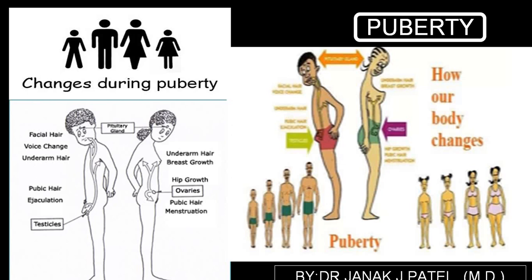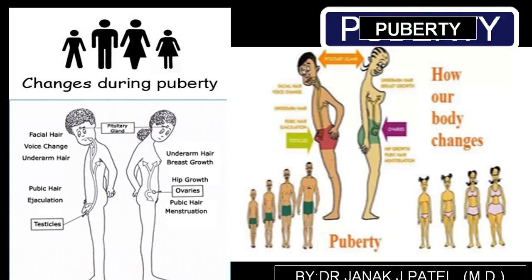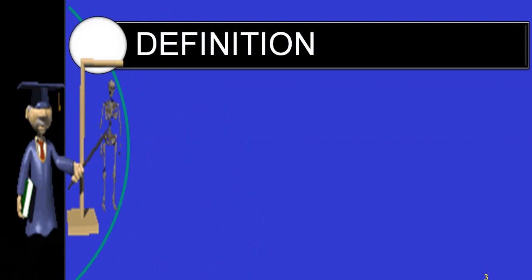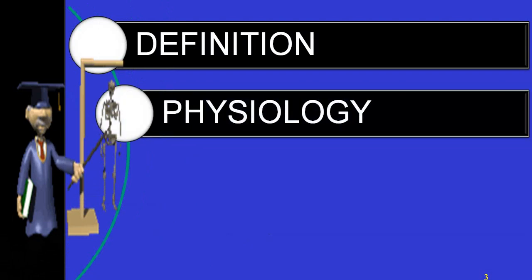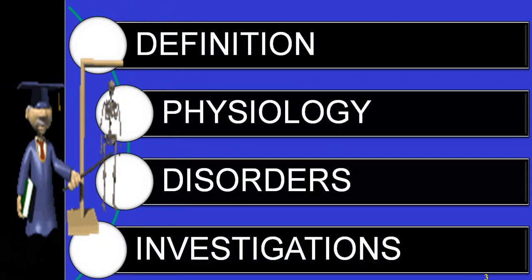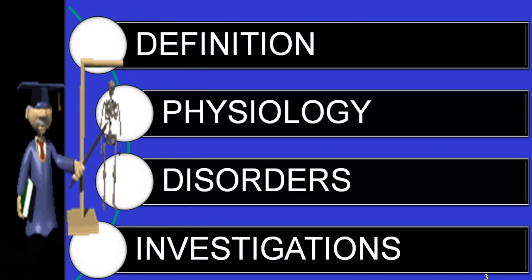Today we'll be talking on what we call puberty. This is quite important because there are a lot of disorders which can occur at puberty. We'll be trying to explain it in a very simplified form: definition, physiology, disorders, and some of the investigations to confirm what the disorders are.